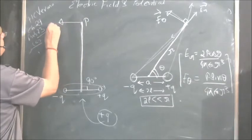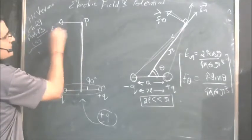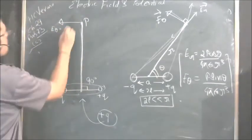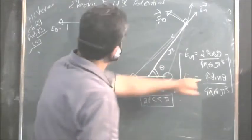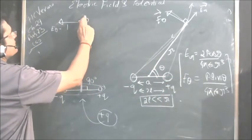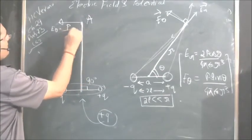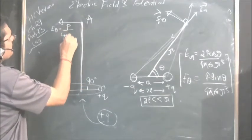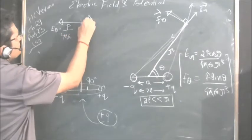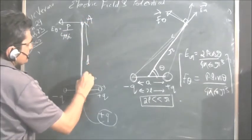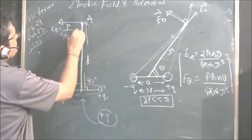Sin 90 is 1, so you have E_theta in this direction. E_theta equals P (don't confuse with this point, let this point be A) divided by 4π ε₀. This distance is given as D in the book, so D³. This is the value of E_theta.